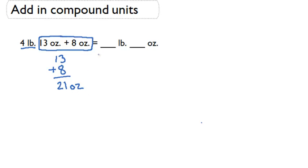If we want to know this in pounds and ounces, we're going to have to figure out how many pounds are in 21 ounces. Since there are 16 ounces in 1 pound, there's going to be 1 whole pound in 21 ounces.